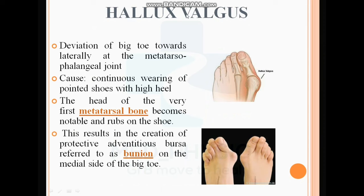Next is hallux valgus. As the name suggests, there is a valgus deformity of the first toe — deviation of the big toe laterally at the metatarsophalangeal joint. It is usually caused by continuous wearing of pointed shoes with high heels. The head of the first metatarsal bone becomes prominent and rubs on the shoe, resulting in the formation of a protective bursa referred to as a bunion on the medial side of the big toe. It is also present in persons with rheumatoid arthritis and in older individuals such as septuagenarians or hexagenarians.